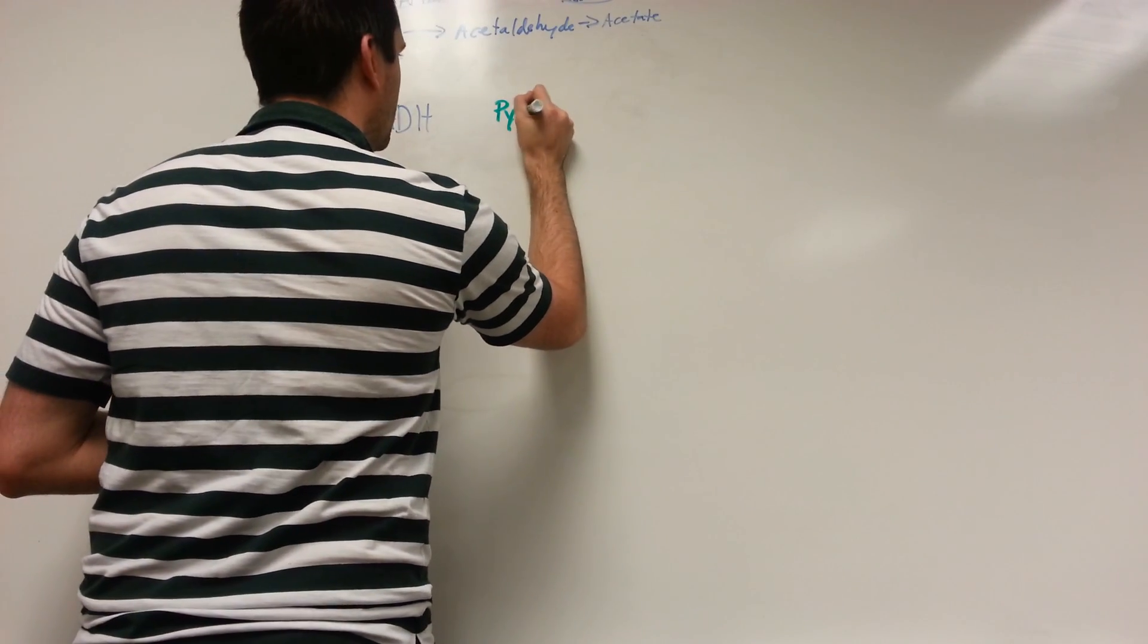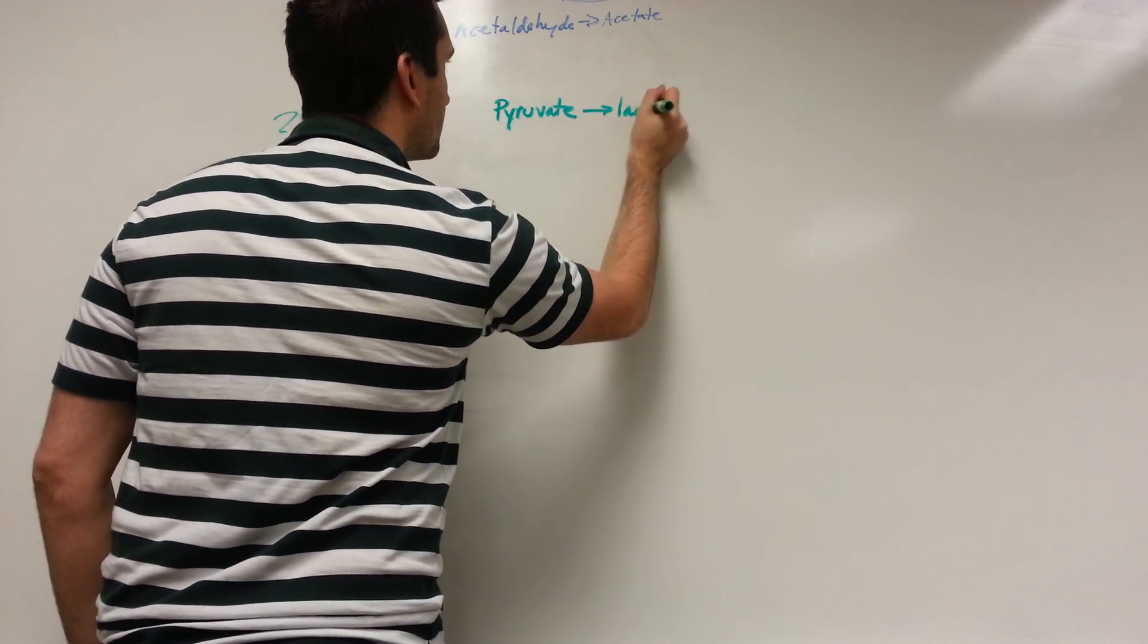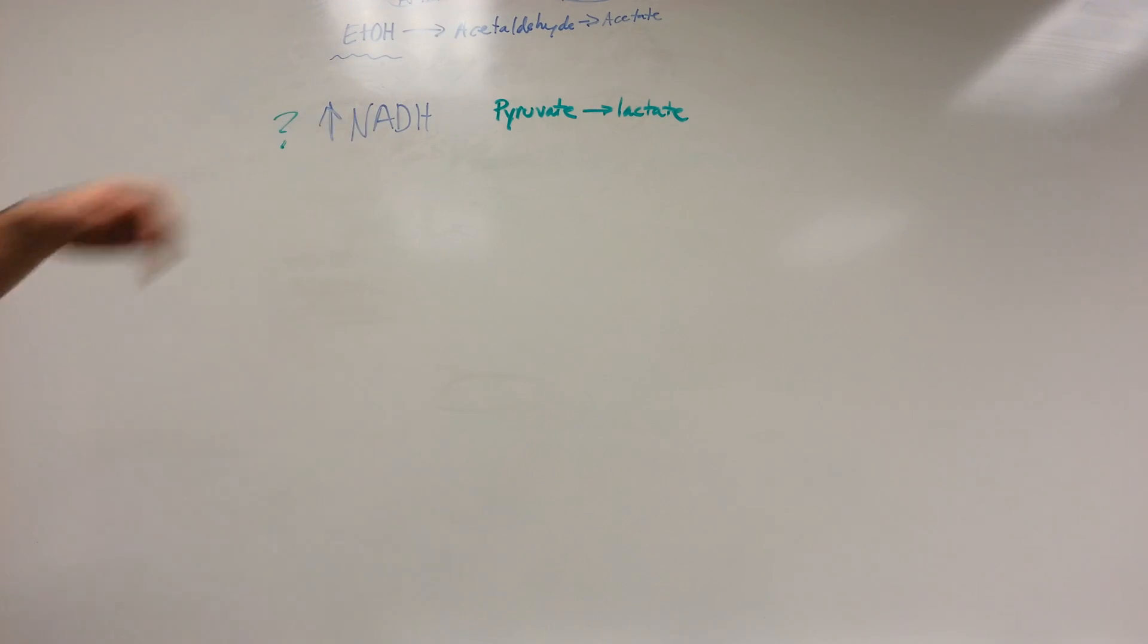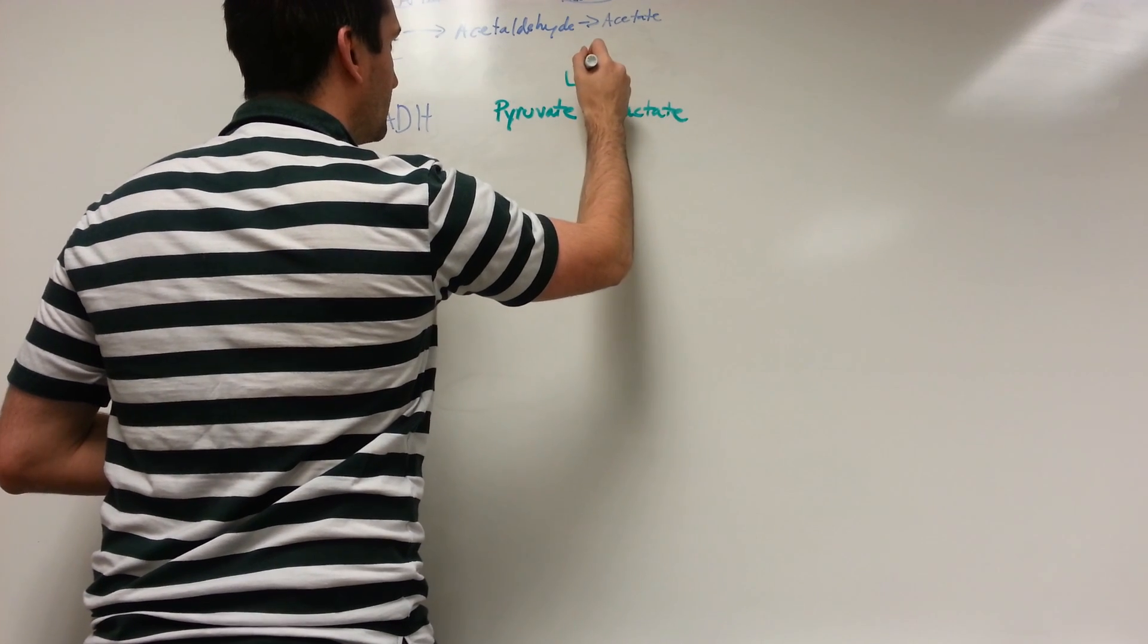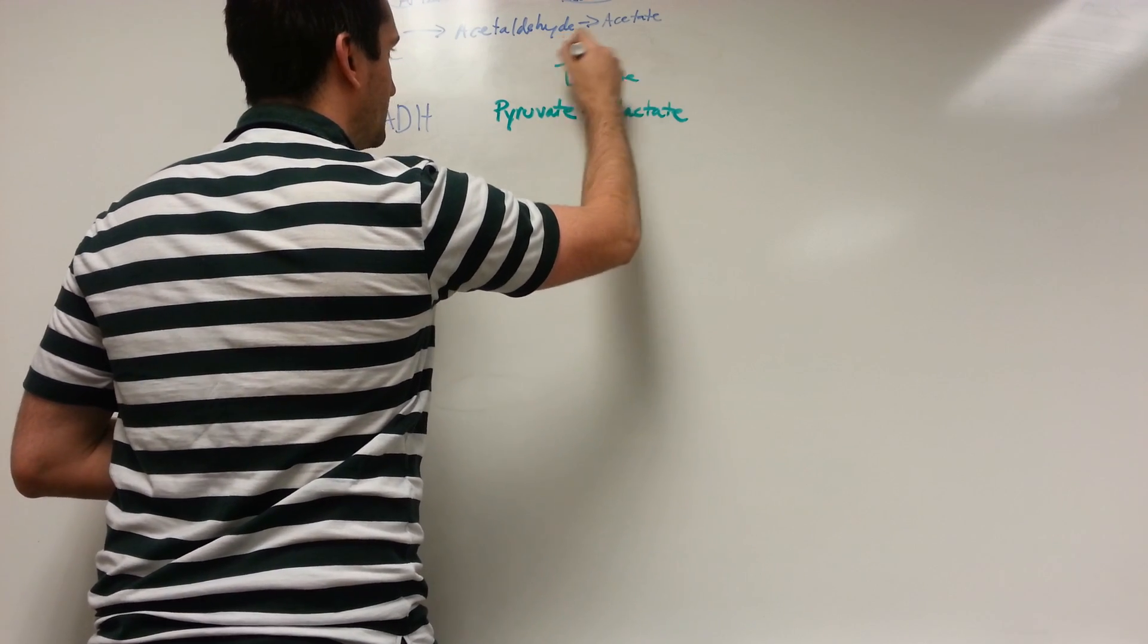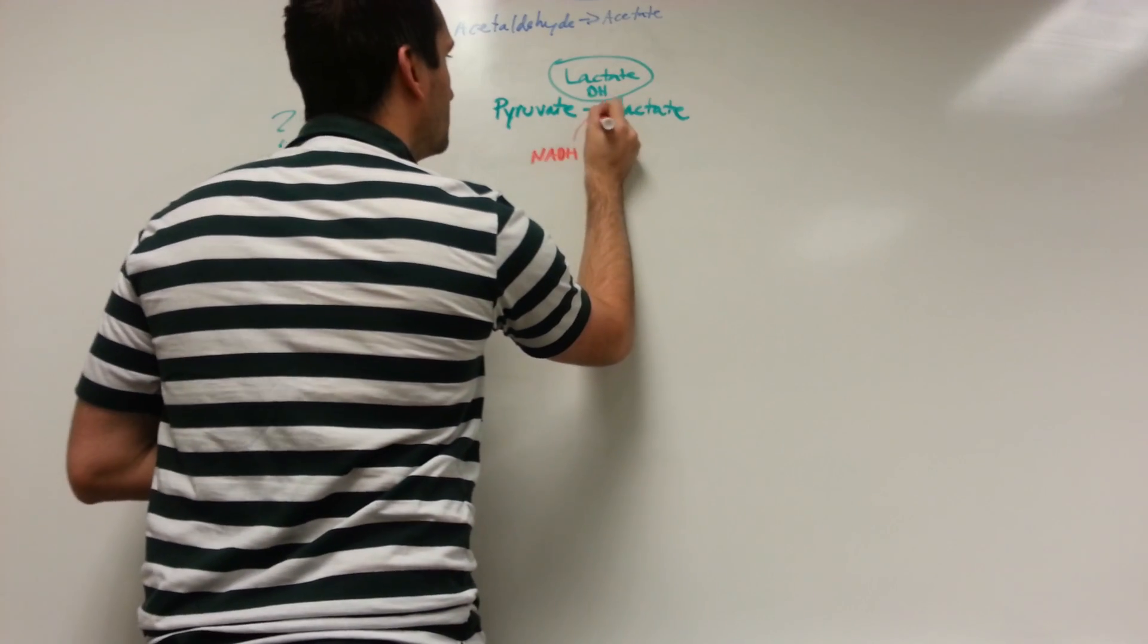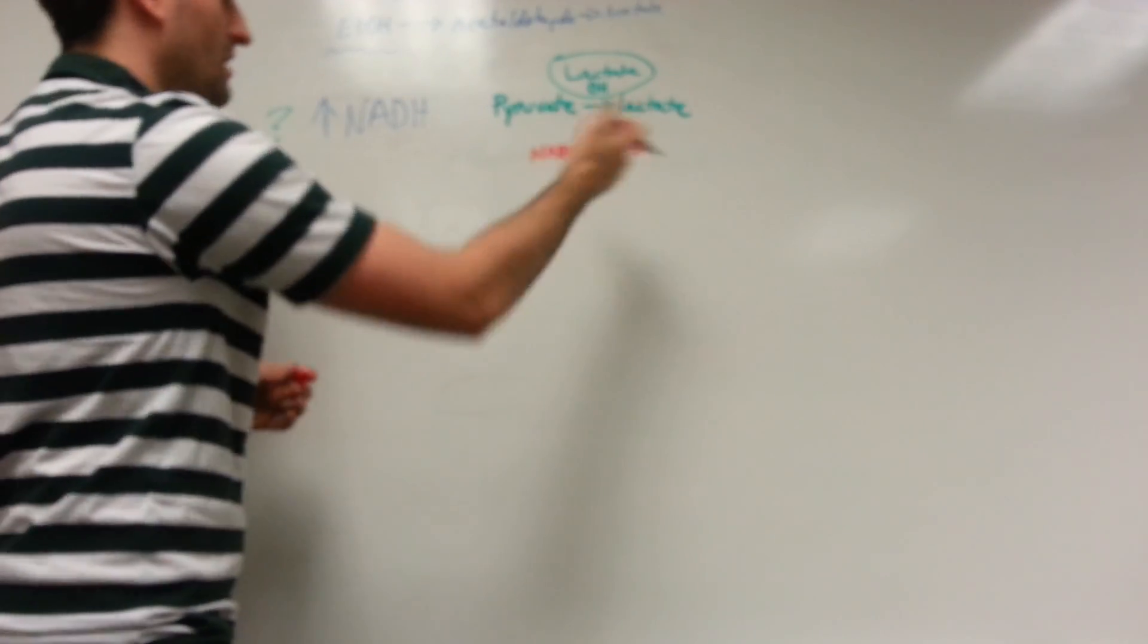The first concept is how do we get rid of this NADH? Well, the body has two main mechanisms for this. That's going to be the breakdown of pyruvate into lactic acid. This is going to be your anaerobic pathway. We're going to use lactate dehydrogenase to recycle our NADH. That lactate dehydrogenase enzyme will convert NADH into our more usable form again, NAD.